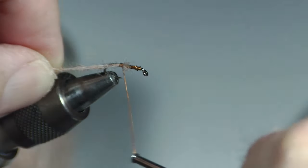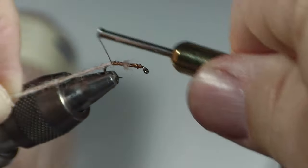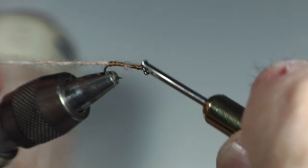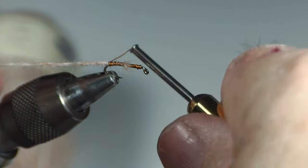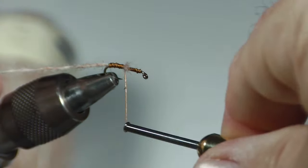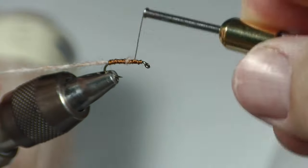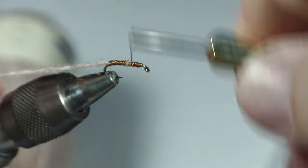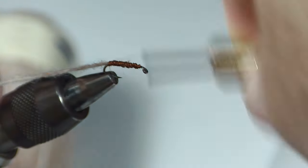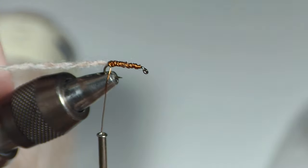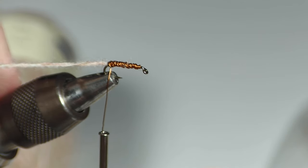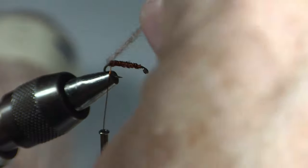I like to catch it about the middle and then just wrap back. And I'll say, I have a tendency to want to try to wrap these really evenly, something like you might try to wrap a copper john. But if you look at, there's some kind of grainy video on YouTube of Sawyer tying some of these. He doesn't worry about the wire being, you know, kind of rough looking. It's just adding weight.